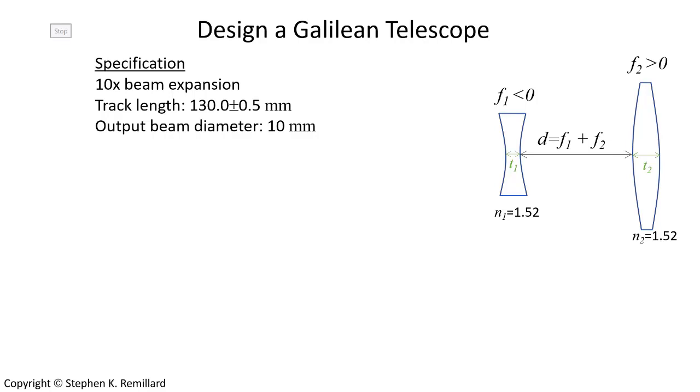The topology of a Galilean telescope is a diverging lens group, followed by a converging lens group, called the thicknesses T1 and T2, and called the lens separation D. We'll use a refractive index of 1.52.